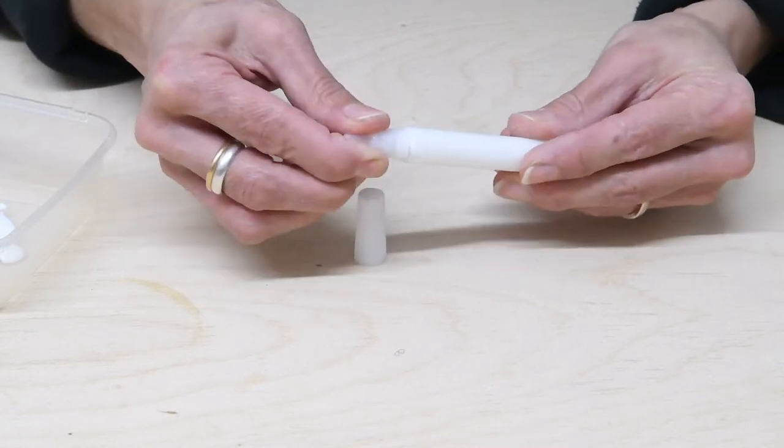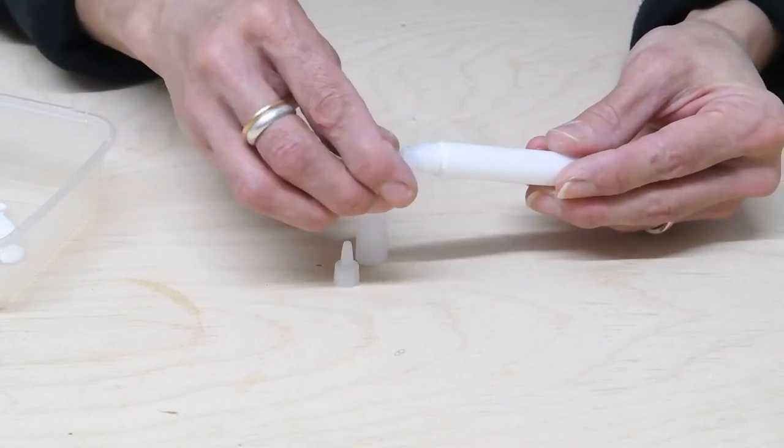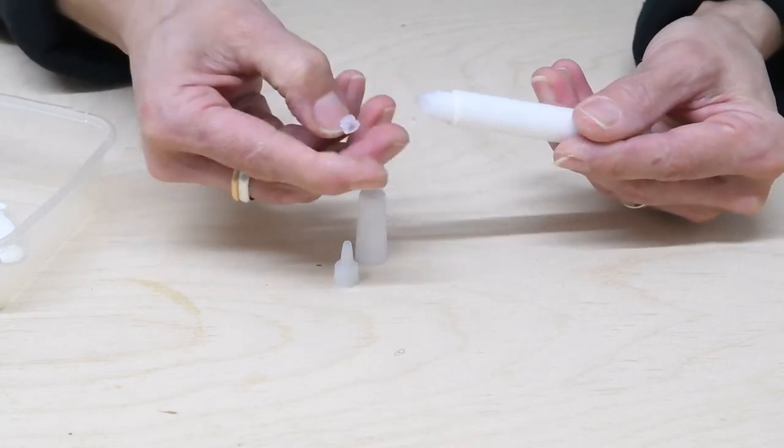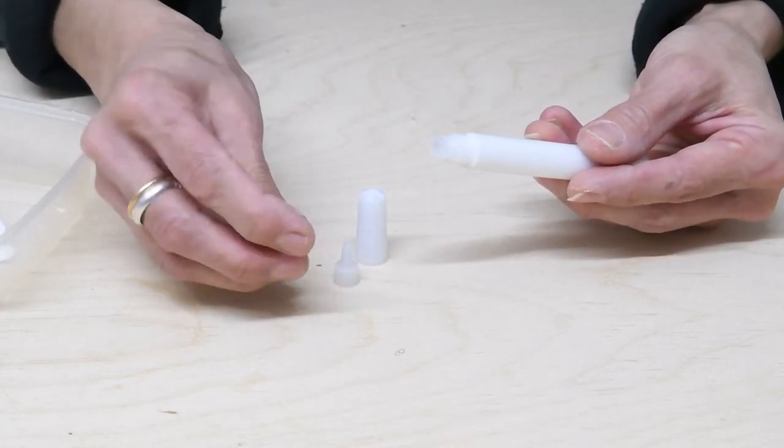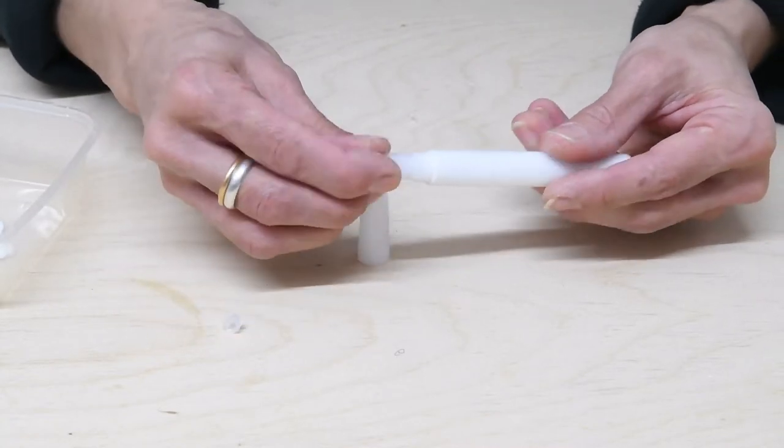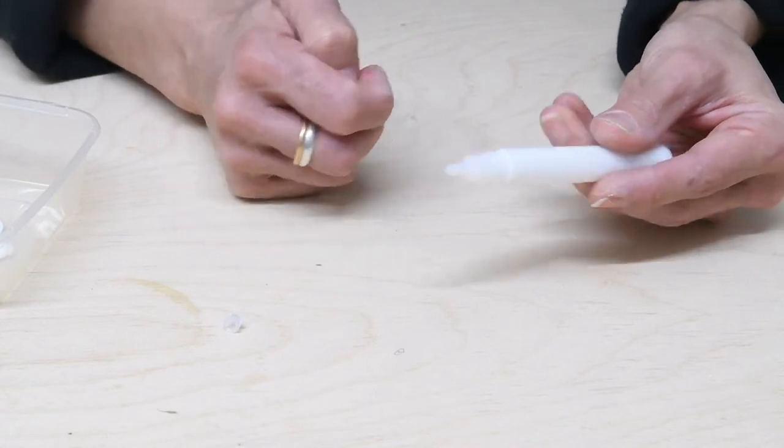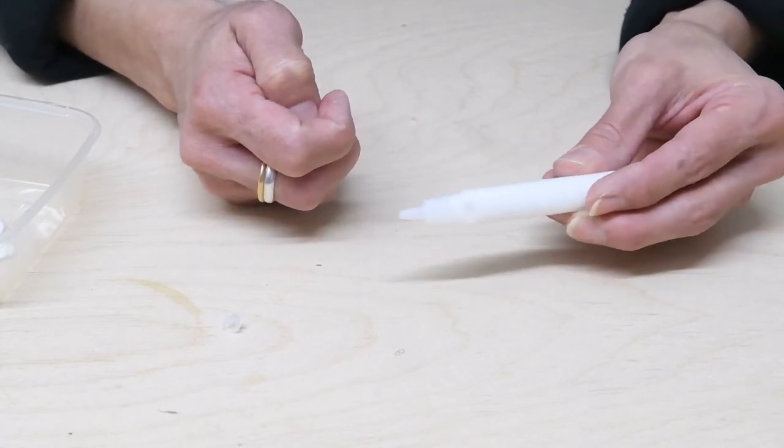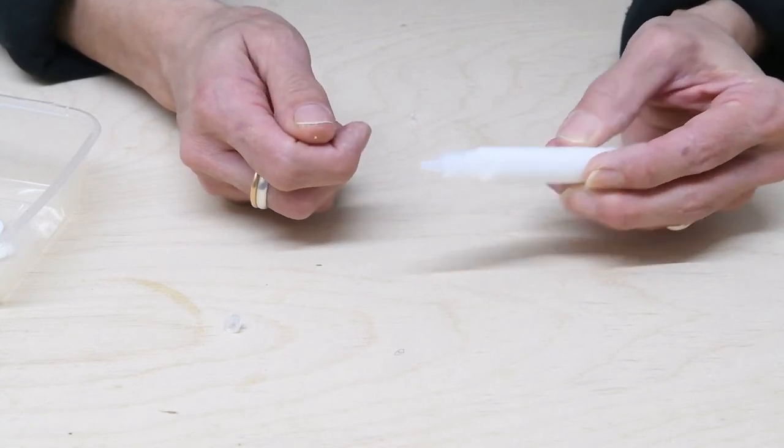Remember to unscrew the nozzle and take out the little safety cap inside which is there just to make sure that the glue doesn't leak. Then screw the nozzle back on and you're ready to go. Now some people find it easier to use the glue pen like this and just squeeze it directly through the nozzle.